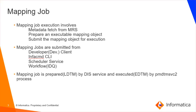A mapping job is executed in multiple phases where each phase is handled by different components of the server. Metadata is fetched by the client from the MRS. DIS prepares the mapping and submits it for execution. And finally, monitoring MRS keeps track of the execution status. Mapping jobs are submitted for execution from different clients like developer client, InfoCMD CLI, scheduler service, and workflow. DIS prepares the mapping for execution, which is called the LDTM phase, and it is executed by PMDTM SVC II process in the EDTM phase.